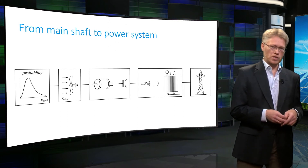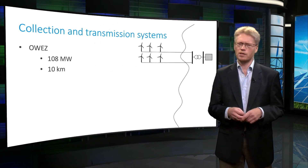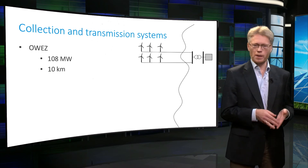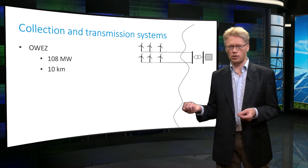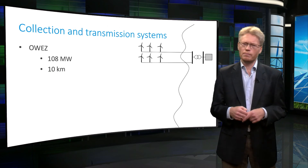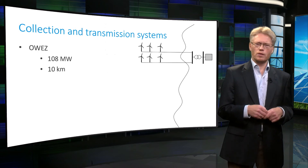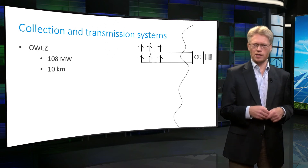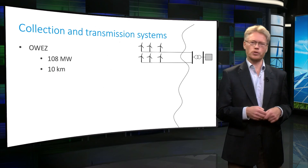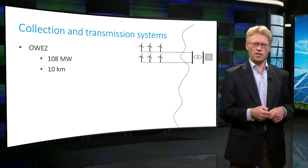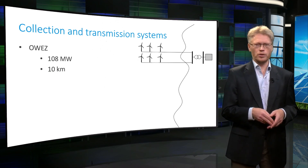For a wind farm, especially offshore, this is more complicated. In a wind farm, a large number of wind turbines are generating electrical power. This power has to be collected within the wind farm, converted to the right voltage level, and transmitted to shore. The way in which this is done mainly depends on the distance to the power system onshore. The offshore wind farm Egmond aan Zee, abbreviated as OWEZ, has a power of 108 MW. At 10 kilometers offshore, it is relatively close to shore. In this case, the power is collected at a voltage level of 33 kV and transmitted to shore at the same voltage level.